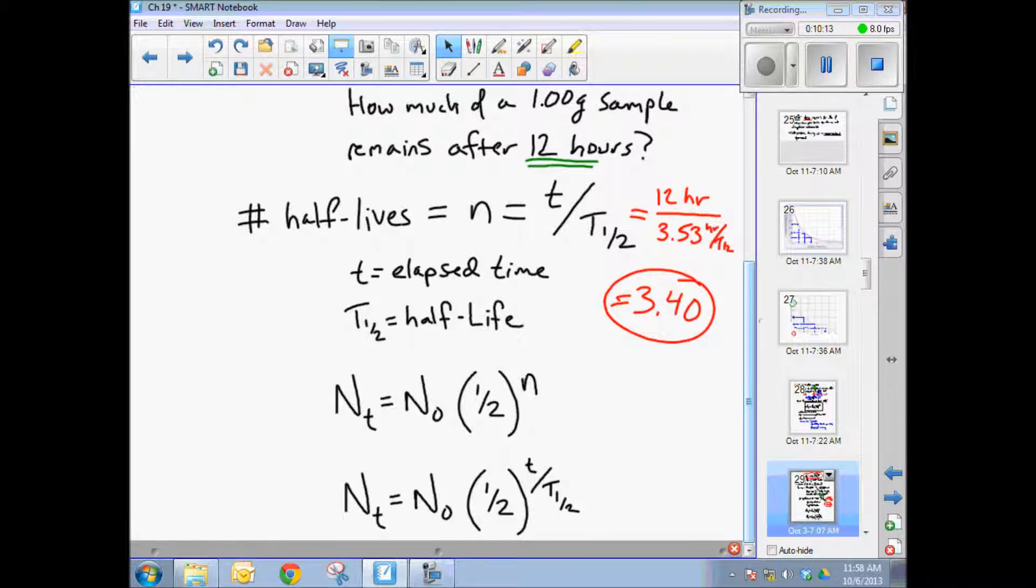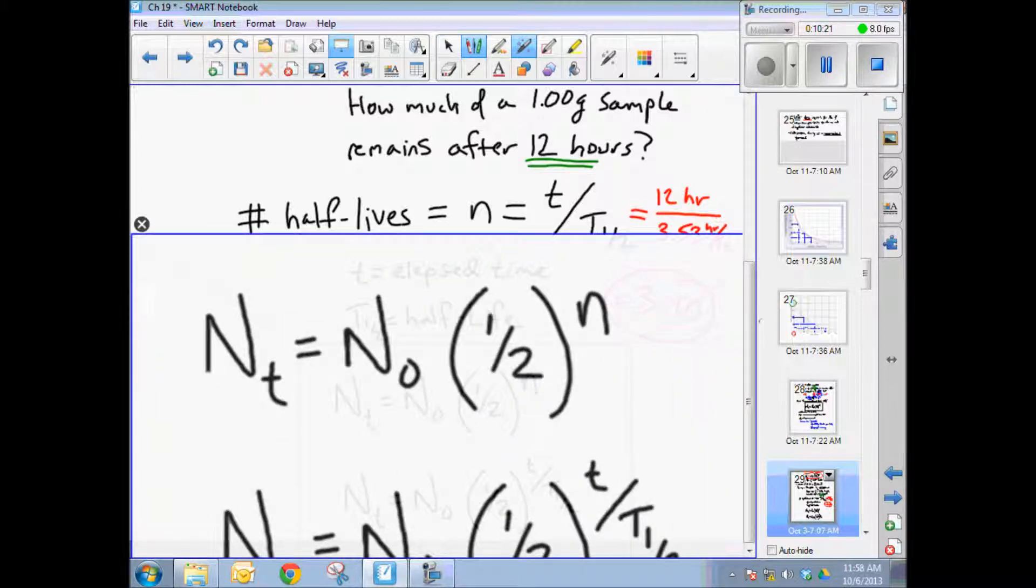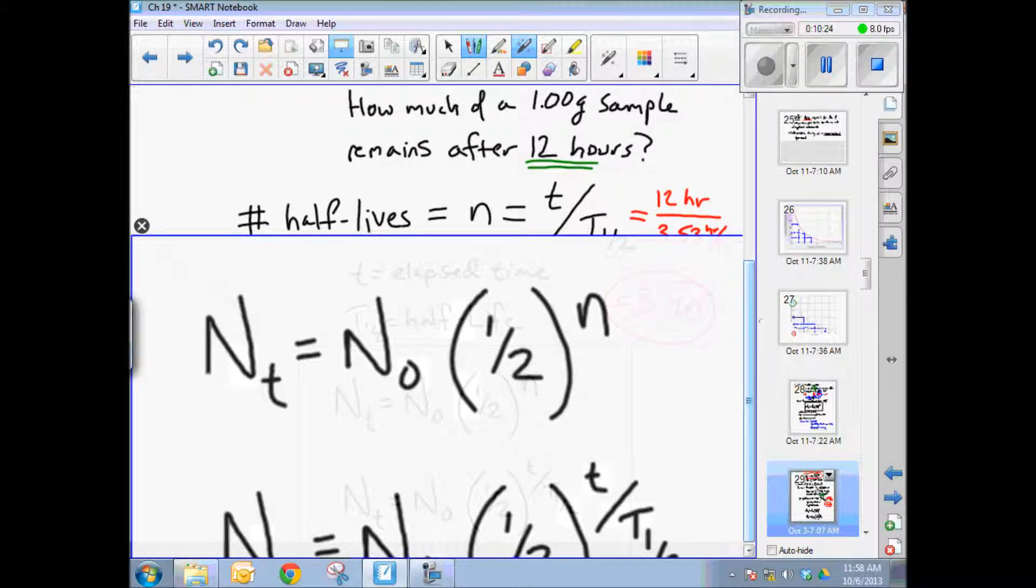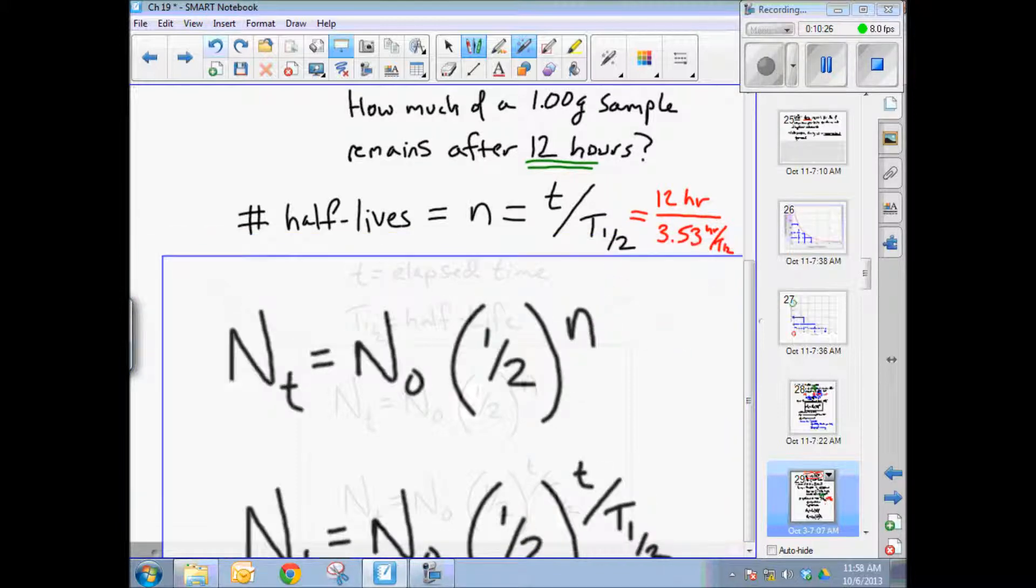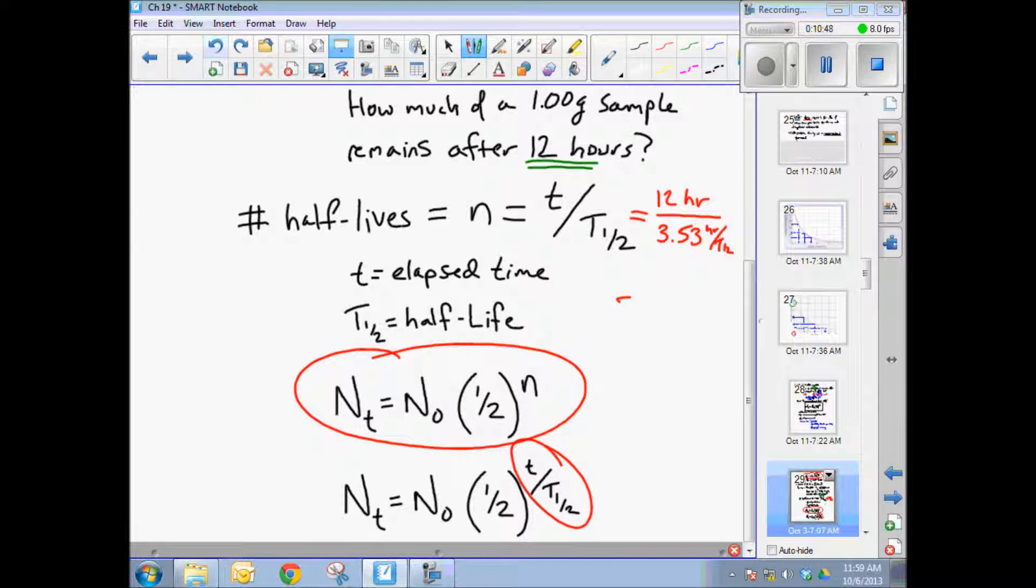So notice we now have these two formulas right here, which are very similar in appearance. They have one thing that's different, and that's the exponent. You use this formula up on top if your number of half lives is a nice round, easy to deal with number. If it's not, if it's going to be a decimal of some sort, then you have to figure out how many half lives has the material gone through. And that's the lower formula right here.